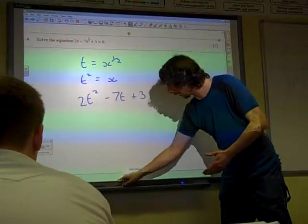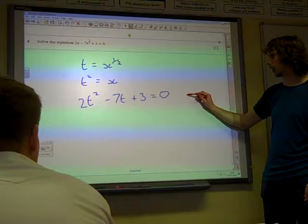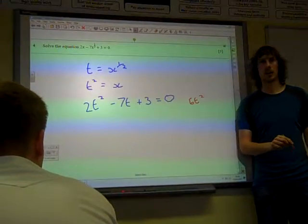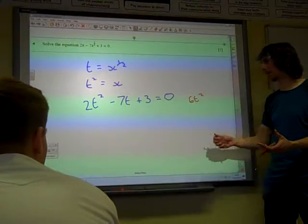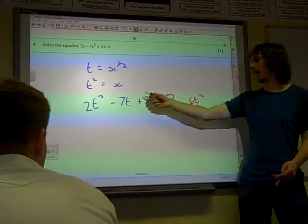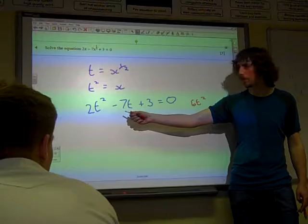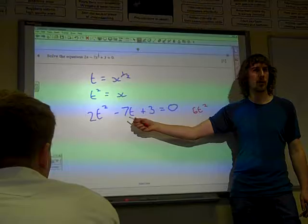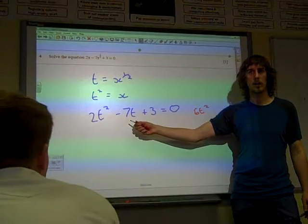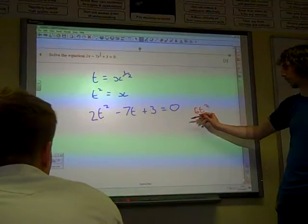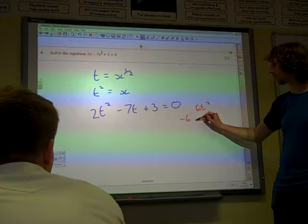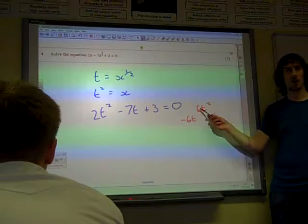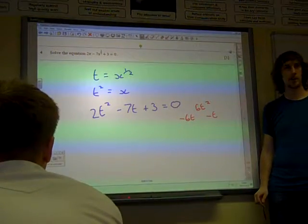Or, just because I like it, we'll do that method where we multiply first and last things, this time we get 6t squared out of it. We say what multiplies together to give plus 6, and adds together to give minus 7? Well, that should be quite easy, shouldn't it? What's it going to be? 6 and 1, it's going to have to be negative for both of them. That would work, wouldn't it? So that multiplies to give plus 6t squared, and adds to give minus 7t.